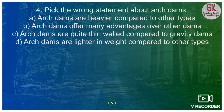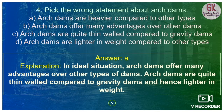Question 4: pick the wrong statement about arc dams. Options are: arc dams are heavier compared to other types of dams; arc dams offer many advantages over other dams; arc dams are quite thin-walled compared to gravity dams; arc dams are lighter in weight compared to other types. In ideal situations, arc dams offer many advantages, are thin-walled compared to gravity dams, and hence lighter in weight. So the wrong statement is option A — arc dams are heavier compared to other types of dams.